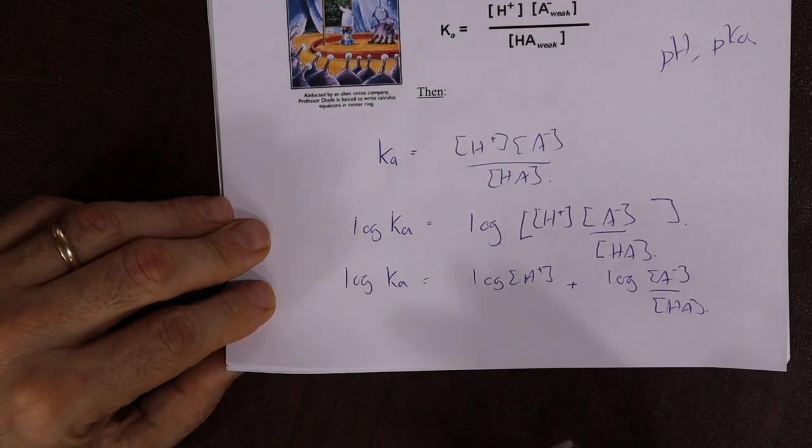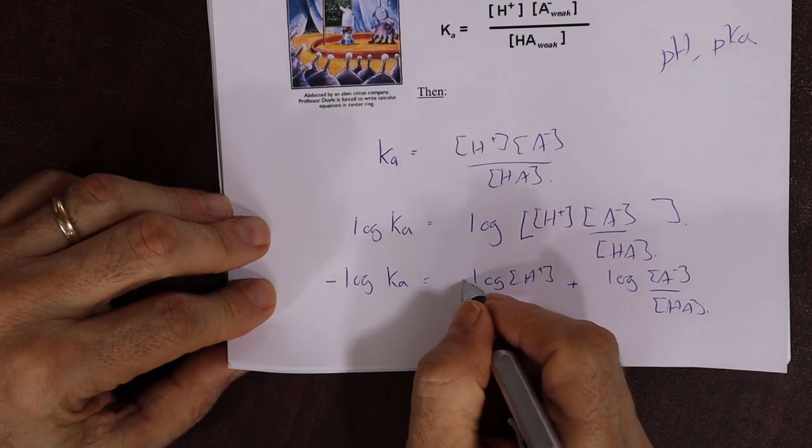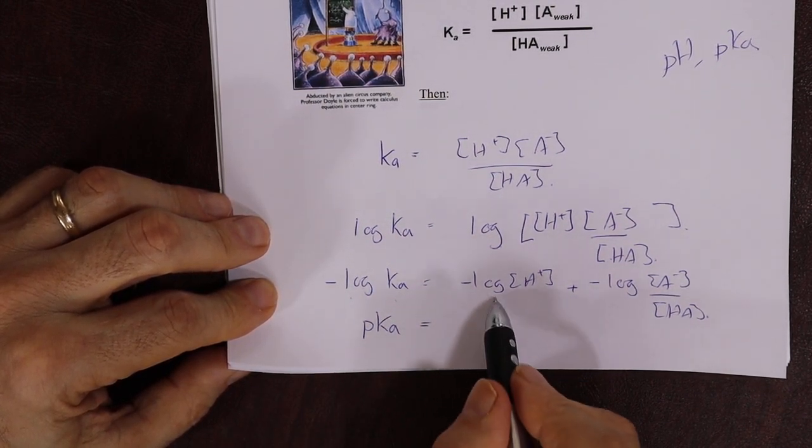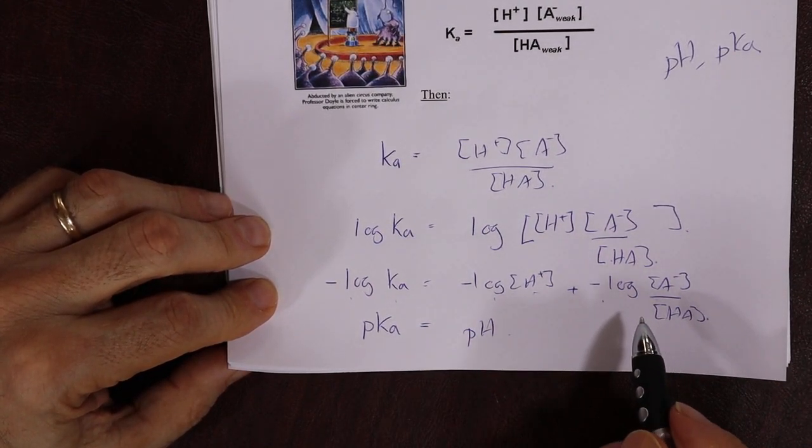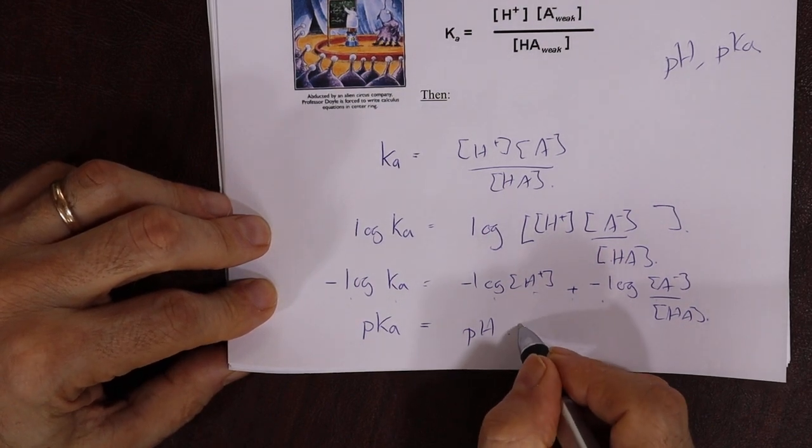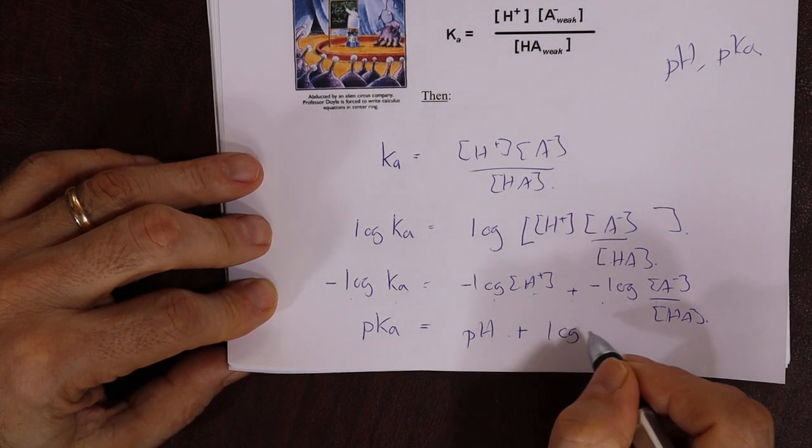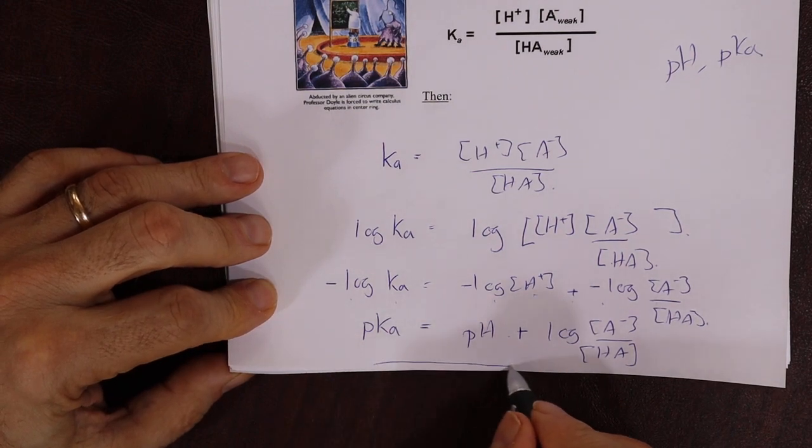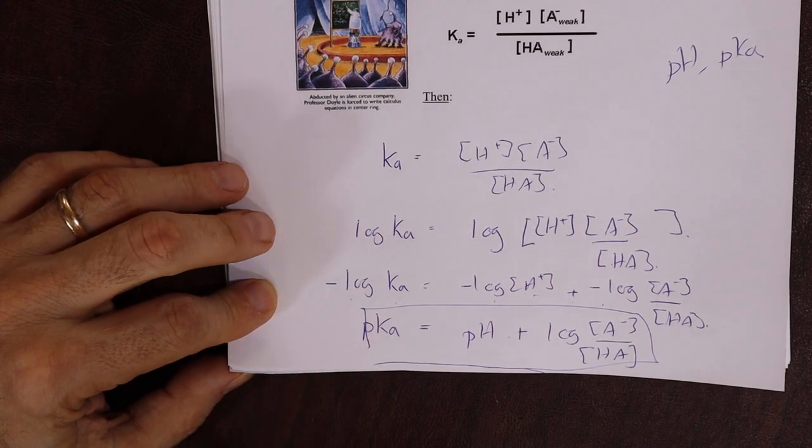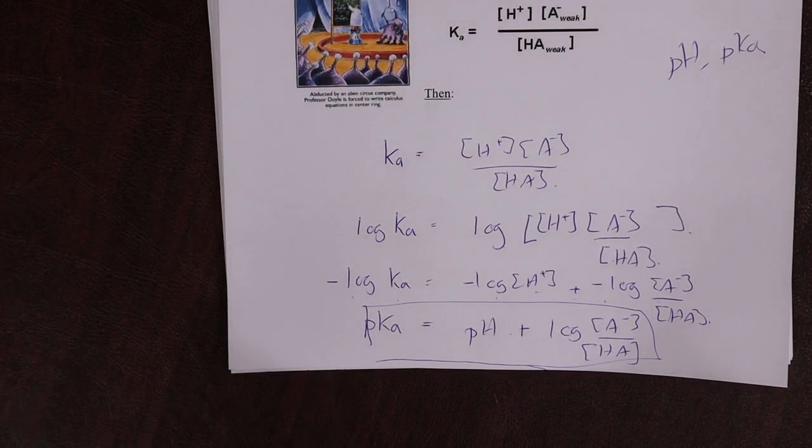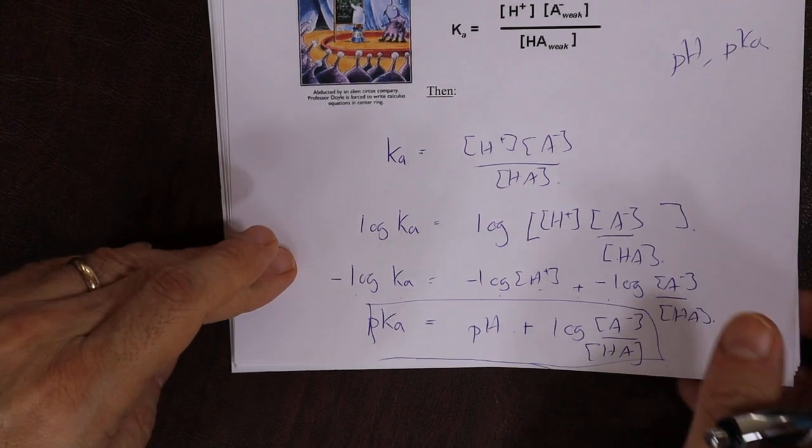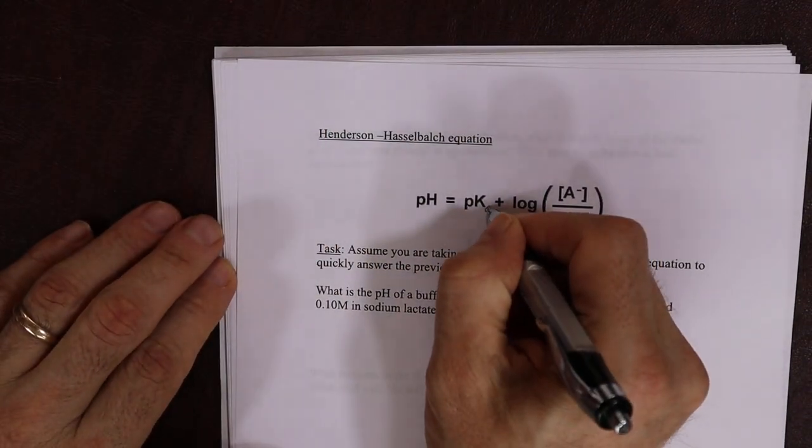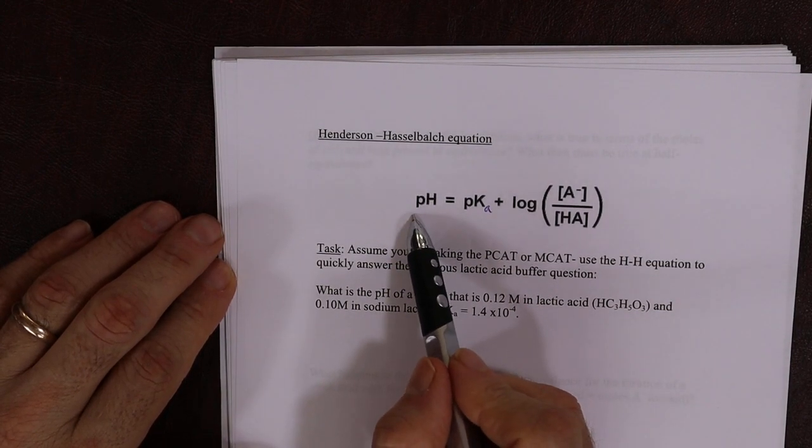The log of something times something is the logs added together. Log Ka equals log of H plus plus log of A minus over HA. We're nearly there, folks, because remember, the minus log is that p function. Just multiply everything by minus. Minus log of Ka is pKa. Minus log of H plus is pH. Minus log, we're adding a minus. That's the Henderson-Hasselbalch equation. Pat yourself on the back. Very good by a chemist. But don't get ahead of yourself. There it is. That's the relationship between pH and pKa.